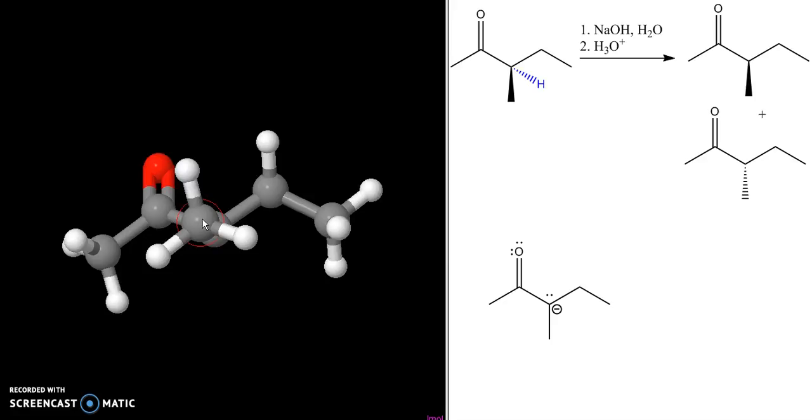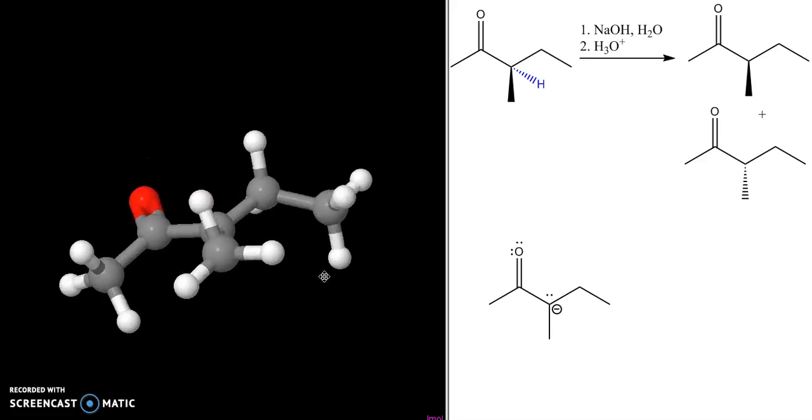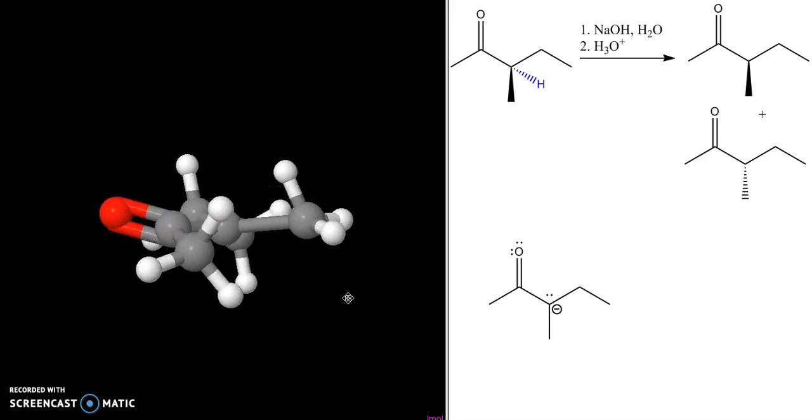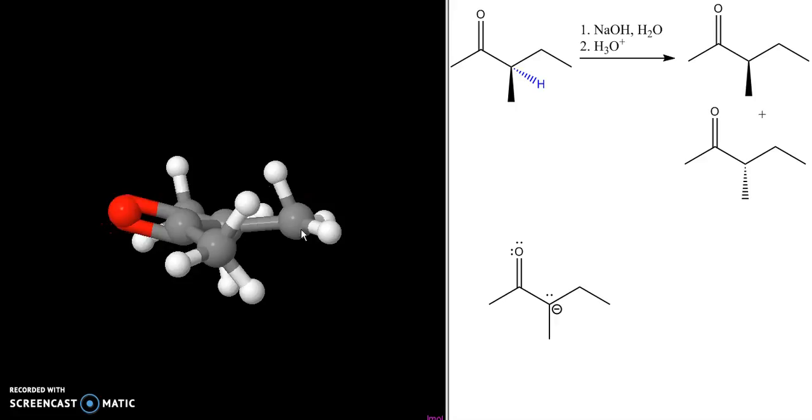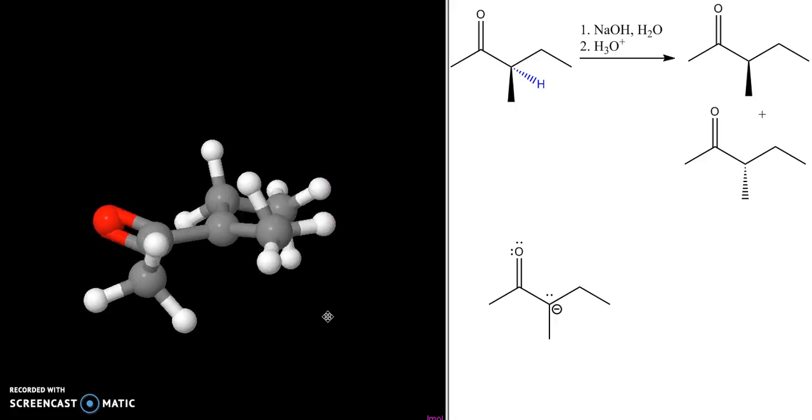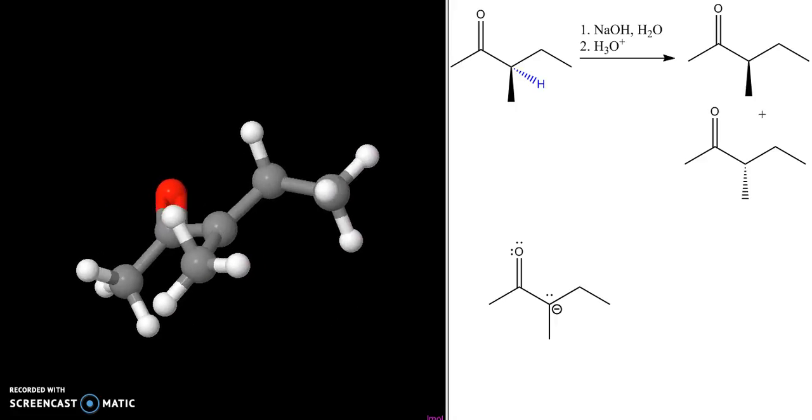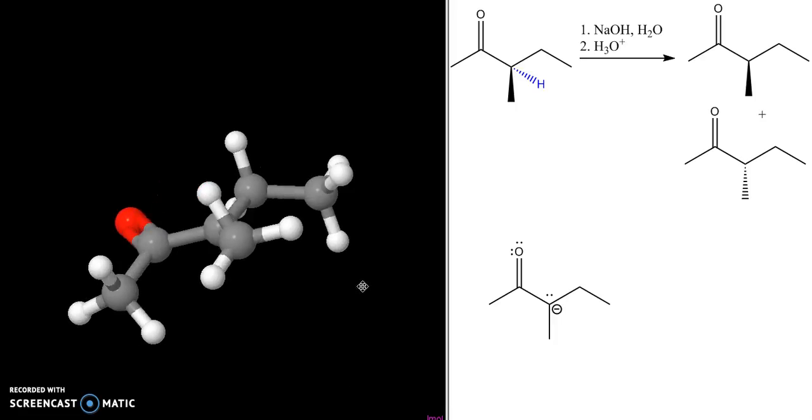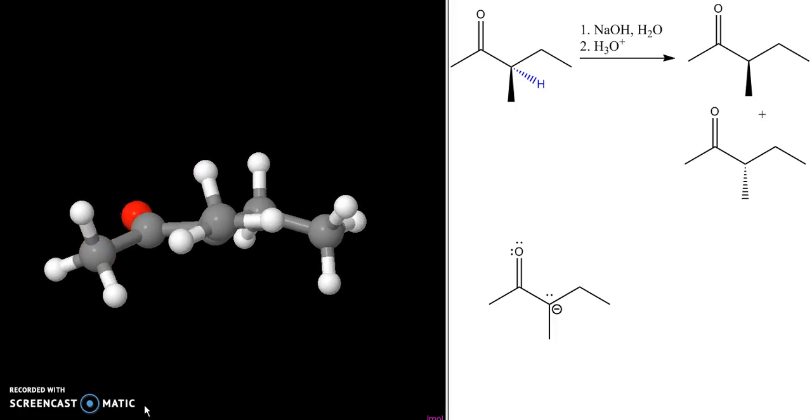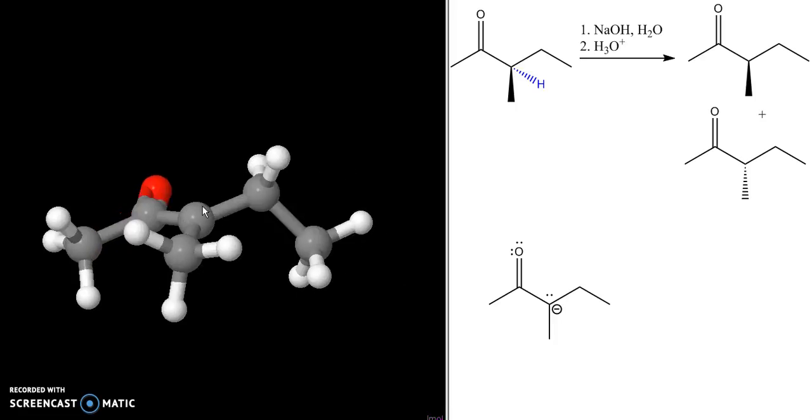This methyl group starts to move down like this because this carbon is going to change from sp3 to sp2 hybridized. We're going to get a planar center here, and that's really important in this whole process. This sp2 carbon has a p orbital on it that's actually in conjugation with this carbonyl group.